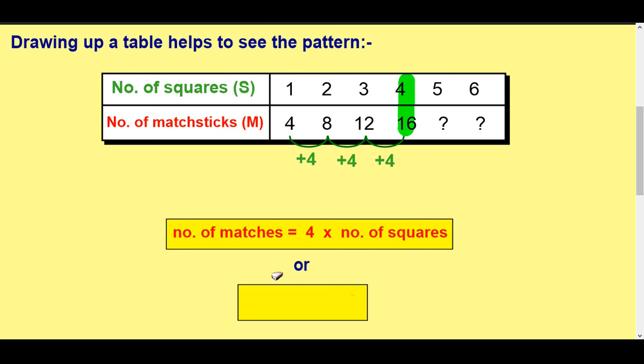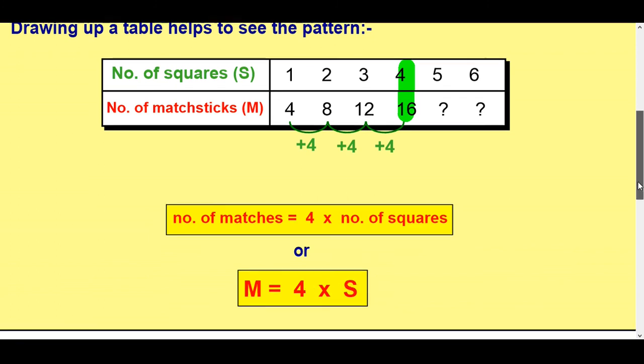So the formula is to get the number of matchsticks and you'll notice it's the bottom one we're always working out here for this side. So the number of matchsticks is 4 times the number of squares. And again we'll shorten that down to get the number of matchsticks M equals 4 times S. So there I've got my formula.